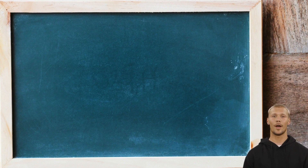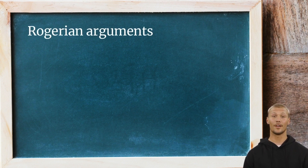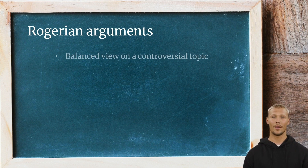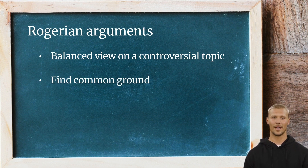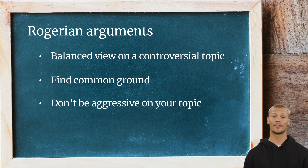There are two popular ways of making an argument. First up is the Rogerian Model. This type of argument helps you to present a balanced view of both sides of a controversial issue. When using the Rogerian approach, the goal is to find common ground and approach the topic in a respectful and fair manner, instead of just trying to win an argument through aggressive tactics. Now let's have a look at an outline example of the Rogerian Model.